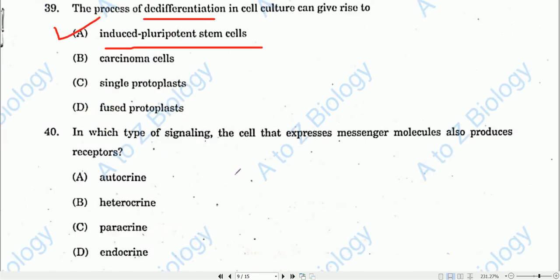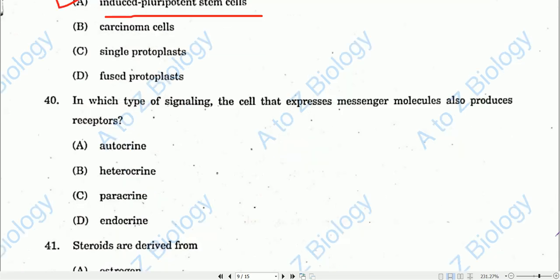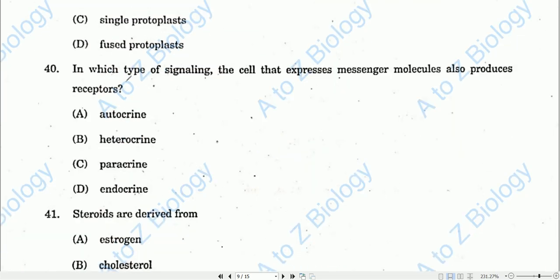Question number forty: In which type of signaling does the cell that expresses the messenger molecule also produce the receptor? That is autocrine signaling, where the production site and the target cell are the same. Option A (autocrine) will be the correct one.